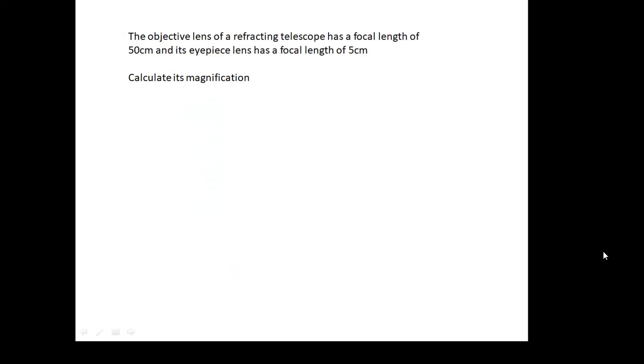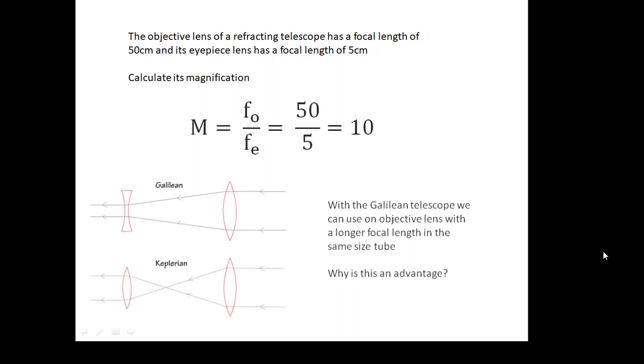Here's an example of a sum you might be asked to do. The objective lens of a refracting telescope has a focal length of 50 centimetres, and its eyepiece has a focal length of 5 centimetres. Calculate its magnification, and using the equation I just gave you, the answer is, so FO over FE, 50 over 5 is 10, magnification of 10.